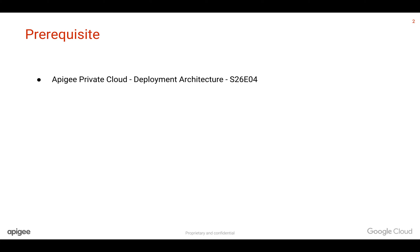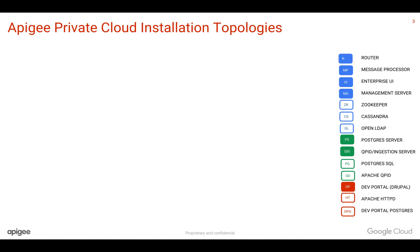Pre-requisites for this video: you need to understand Apigee Private Cloud deployment architecture — for that you can refer to the earlier format video. In our earlier video, we discussed the various components involved in Apigee Edge Private Cloud. Primarily it is divided into API services, analytics services, and developer services.